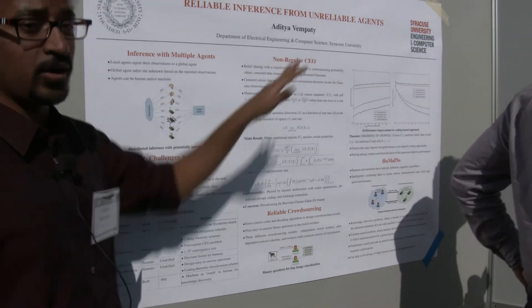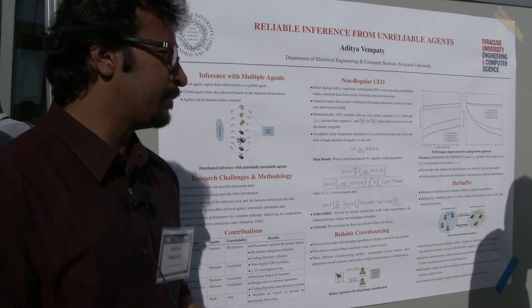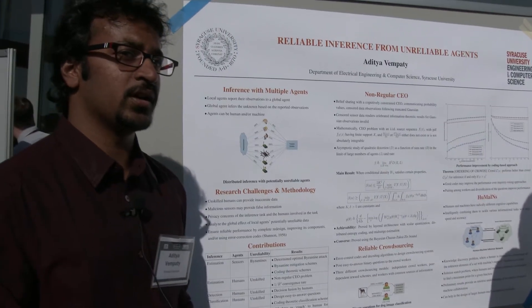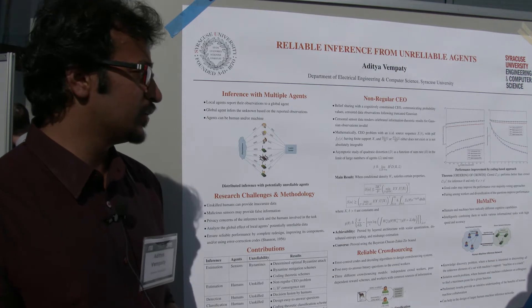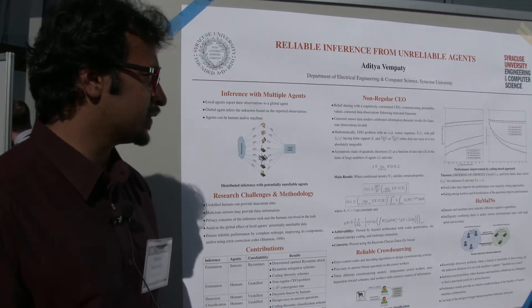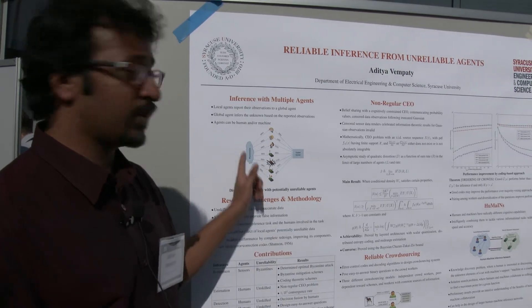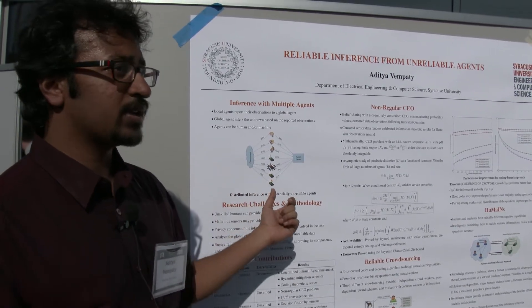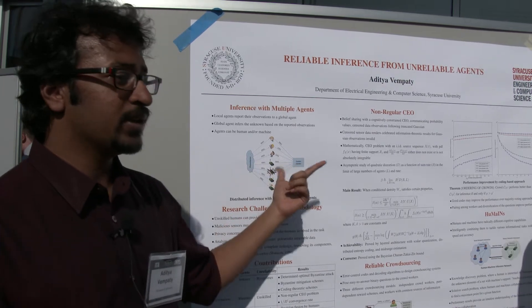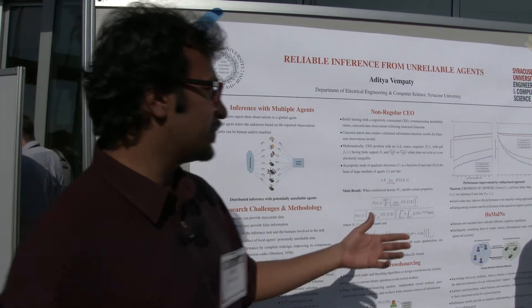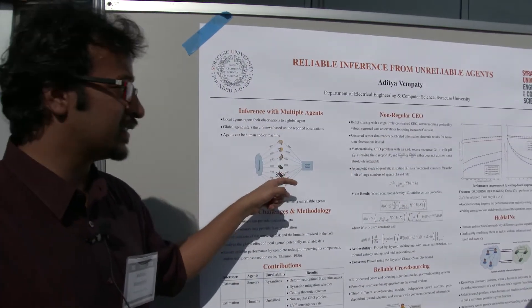The first one is called the non-regular CEO problem. This is typical of the traditional CEO problem, where you have a bunch of agents sending out information about their inference to a centralized unit called the CEO — Chief Executive Officer or Chief Estimation Officer — and the goal is trying to estimate the unknown. The goal is to understand how the distortion between the estimate and the true value trades off with the total sum rate, where the sum rate is the sum of the rates at which these agents are transmitting data.